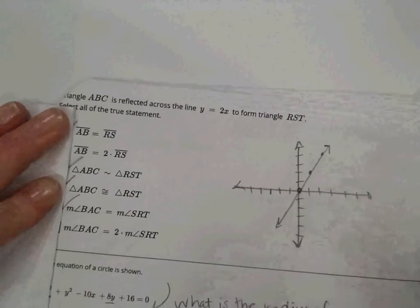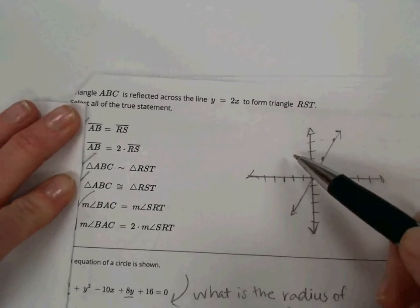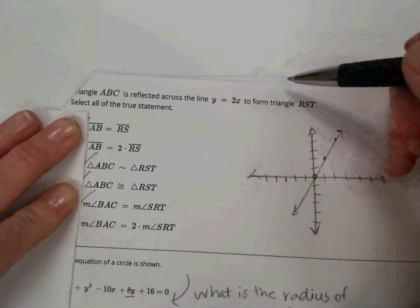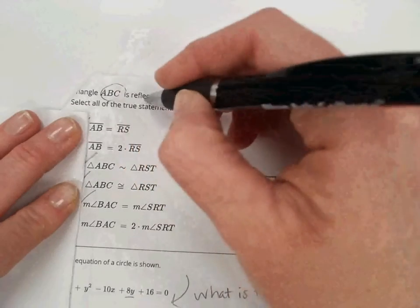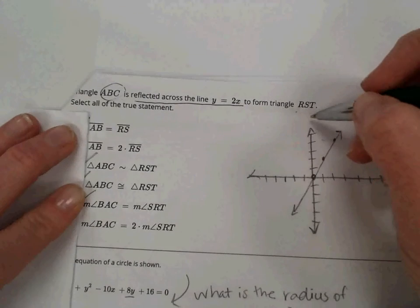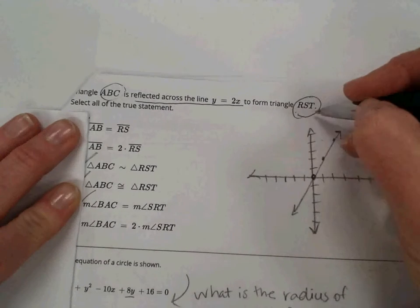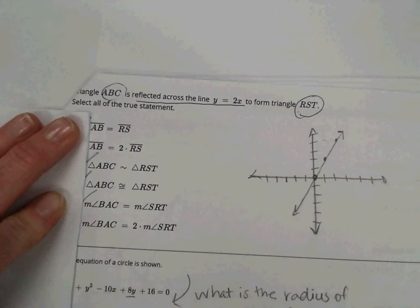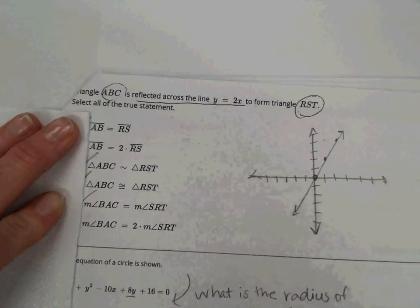Next question, question 17, is asking the triangle ABC is reflected across the line y equals 2x to transform triangle RST. So these are some transformations. Select all the statements that are true. So the key here is that ABC is reflected across the line y equals 2x. I just drew a sketch of that. It wasn't necessary, but it got me started thinking about the problem. And we formed triangle RST. So those two triangles would be congruent. It's just a transformation. There's no dilation there.